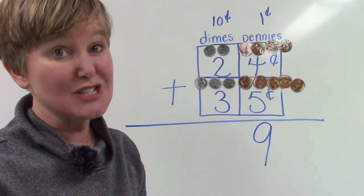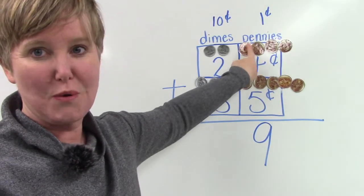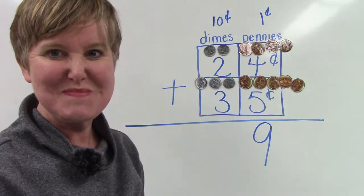You could also do this just by counting on. You could say, I have four plus five more. Four, five, six, seven, eight, nine.